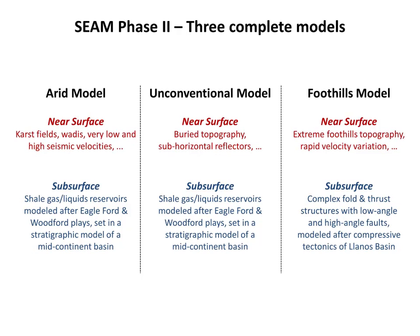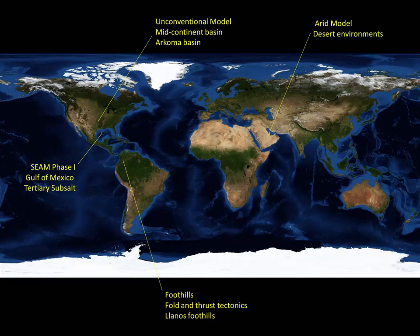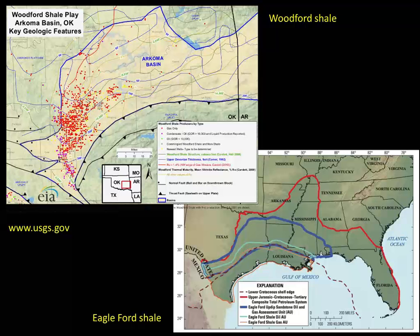The three models — unconventional, ARID, and foothills — represent a wide range of structural and stratigraphic features in both the near-surface and subsurface. Stratigraphic features in the subsurface are the theme of the unconventional and ARID models; complex fold and structural features are the theme of the foothills model. Each model has unique near-surface features based on its specific geologic type area. The unconventional model is based on the Arcoma Basin which hosts the Woodford Shale; the ARID model's near-surface is based on desert environments of the Saudi Arabian Peninsula; and the foothills model's near-surface is based on the Lanos Basin in Colombia, South America.